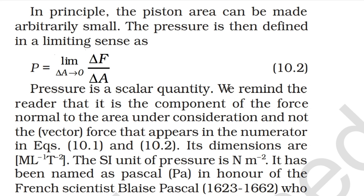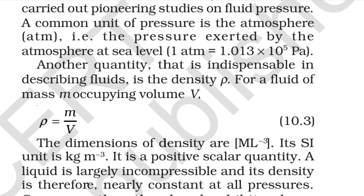In principle, the piston area can be made arbitrarily small. Pressure is then defined in a limiting sense as P = lim(ΔA→0) F/A. Pressure is a scalar quantity — it is the component of the force normal to the area, not the vector force, that appears in the numerator. The SI unit of pressure is newton per metre square, named the pascal in honour of French scientist Blaise Pascal.